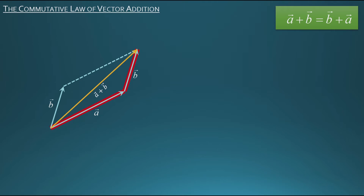Now let's do something different. This time I'm going to redraw vector a, and I'm going to do that at the top of the parallelogram like this. Again I'm allowed to do that because this is a parallelogram, so I know that that new vector a that I've drawn has the same magnitude and direction as the original vector a that I drew. And if I look at this vector b and vector a, they're again in a tip-to-tail configuration so I can use the triangle law of vector addition to add them.